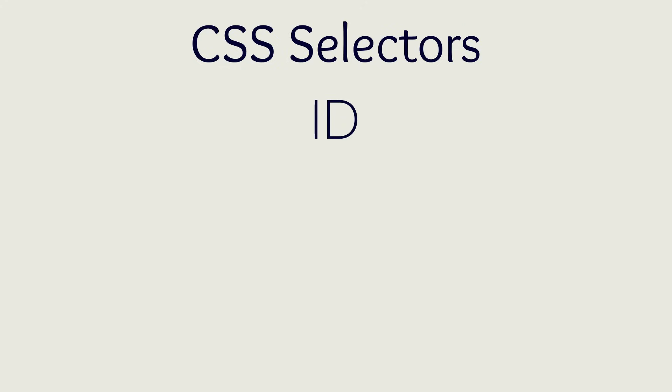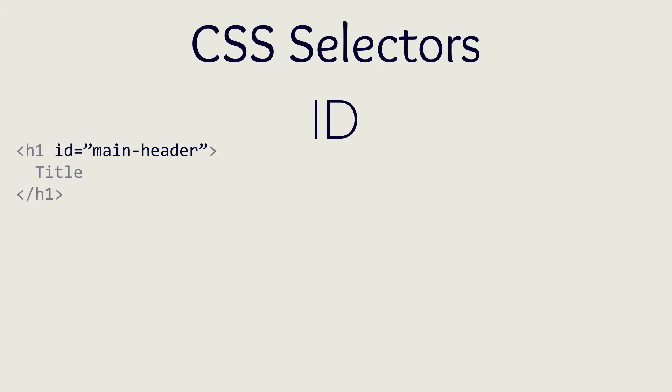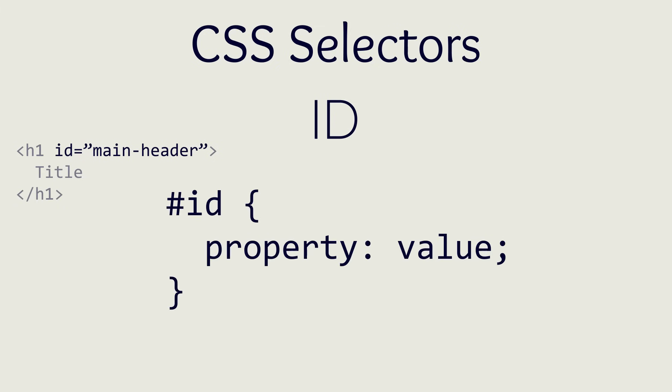The last common selector is the ID selector. The ID selector is very similar to the class selector in that it is an HTML attribute, but an element can only have one ID while it can have multiple classes. An ID also should be unique across the entire webpage, but HTML does not actually enforce this. To use an ID as a selector, you simply need to use a pound sign followed by the ID name, much like how classes use a period followed by the class name. Because of this, I very rarely use IDs. In 99% of all my CSS, I use class selectors and avoid using HTML and ID selectors as much as possible.